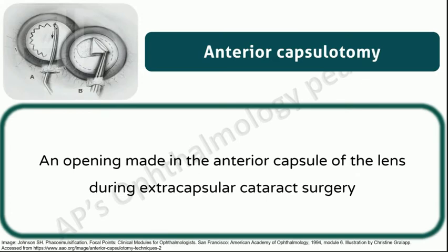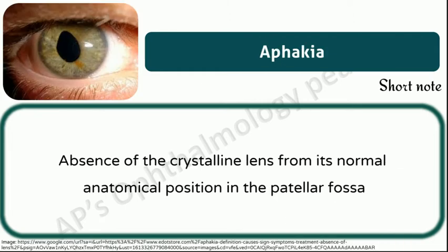Anterior capsulotomy: an opening made in the anterior capsule of the lens during extracapsular cataract surgery. The important types are the can opener technique, linear or envelope method, and continuous curvilinear capsulorhexis.